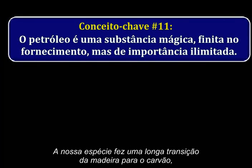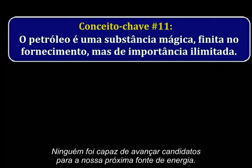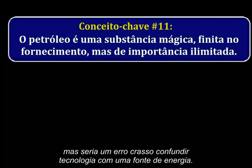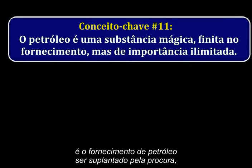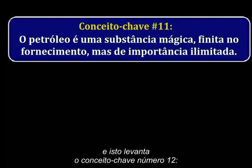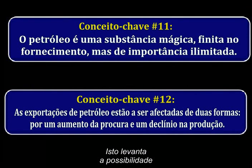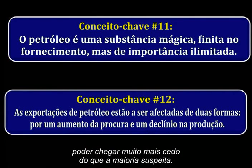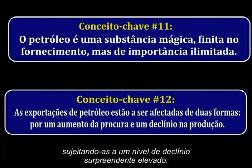Our species transitioned over many years from wood to coal because coal was a better fuel source, and we transitioned over several decades from coal to oil for the same reason. Nobody has been able to advance any candidates as our next source of energy. Technology is not a source of energy — it may help us to exploit our energy more efficiently, but it would be a big mistake to confuse technology with an energy source. What we need to keep a careful eye out for is the supply of oil being exceeded by demand. Oil exports are being hit two ways — by rising demand and declining production — raising the prospect that the moment when the world's nations finally realize there's not enough oil to supply everybody may come much sooner than most suspect. Exponential functions are hard for most humans to grasp, and oil exports are being exponentially squeezed in two directions, subjecting them to a surprisingly high rate of decline.